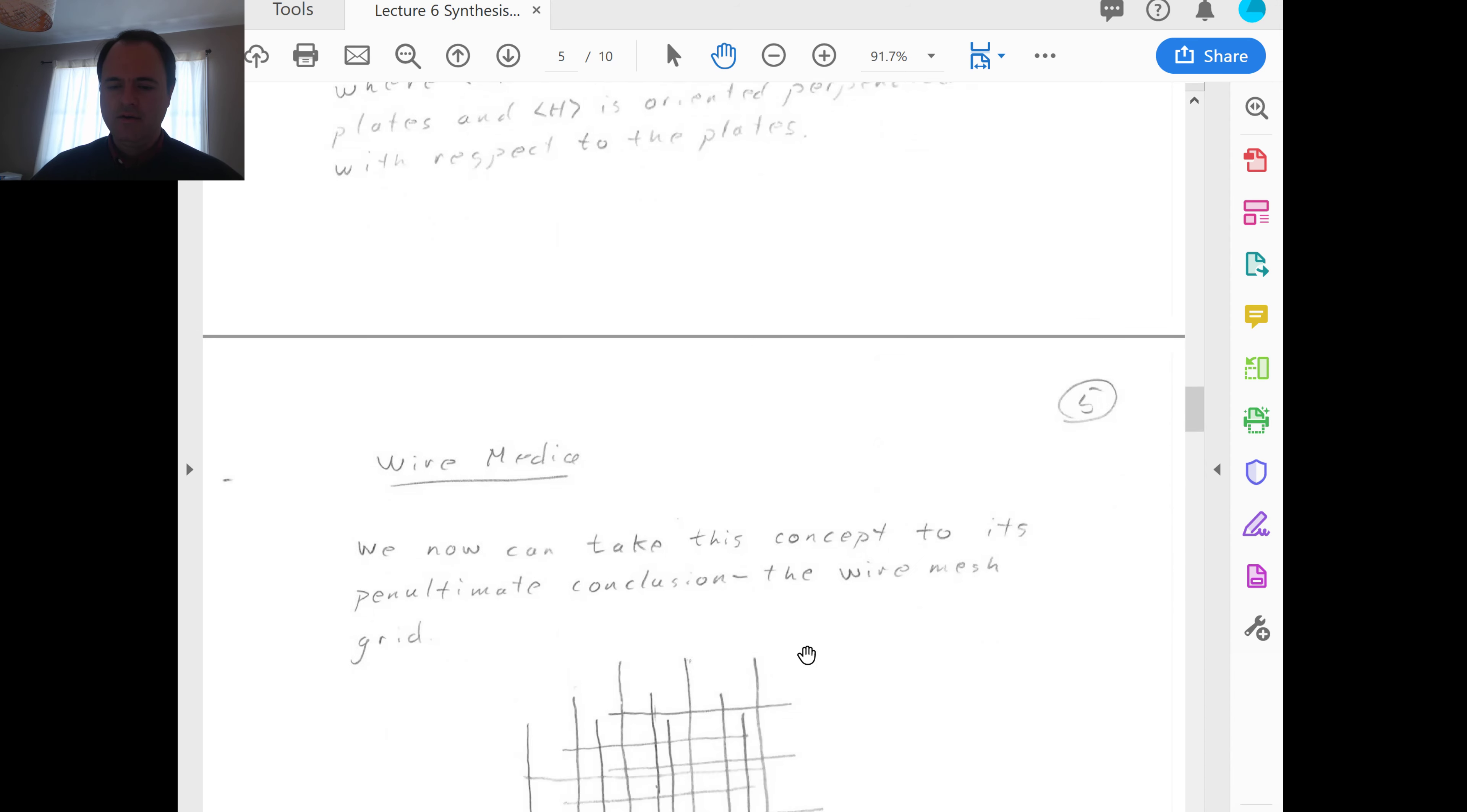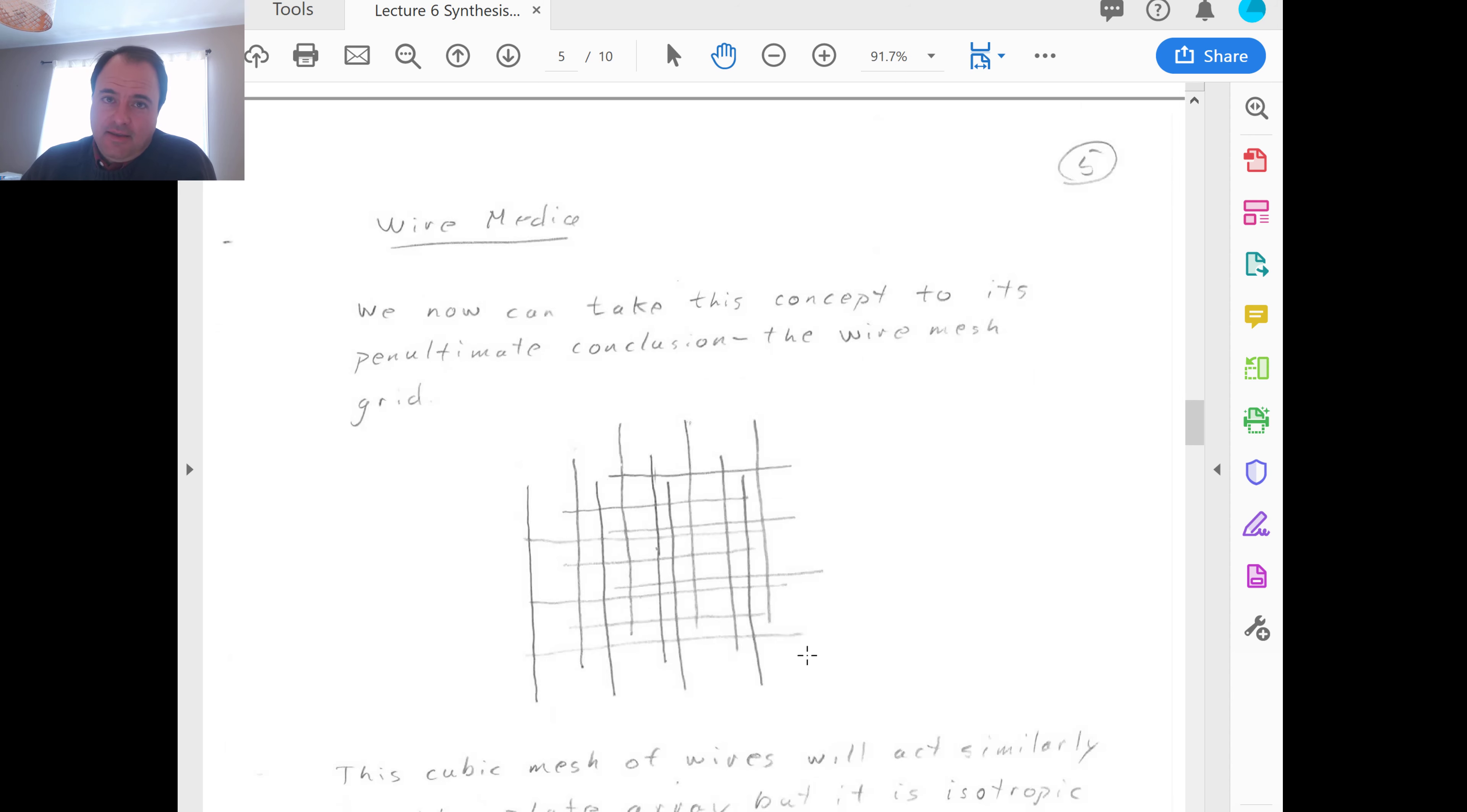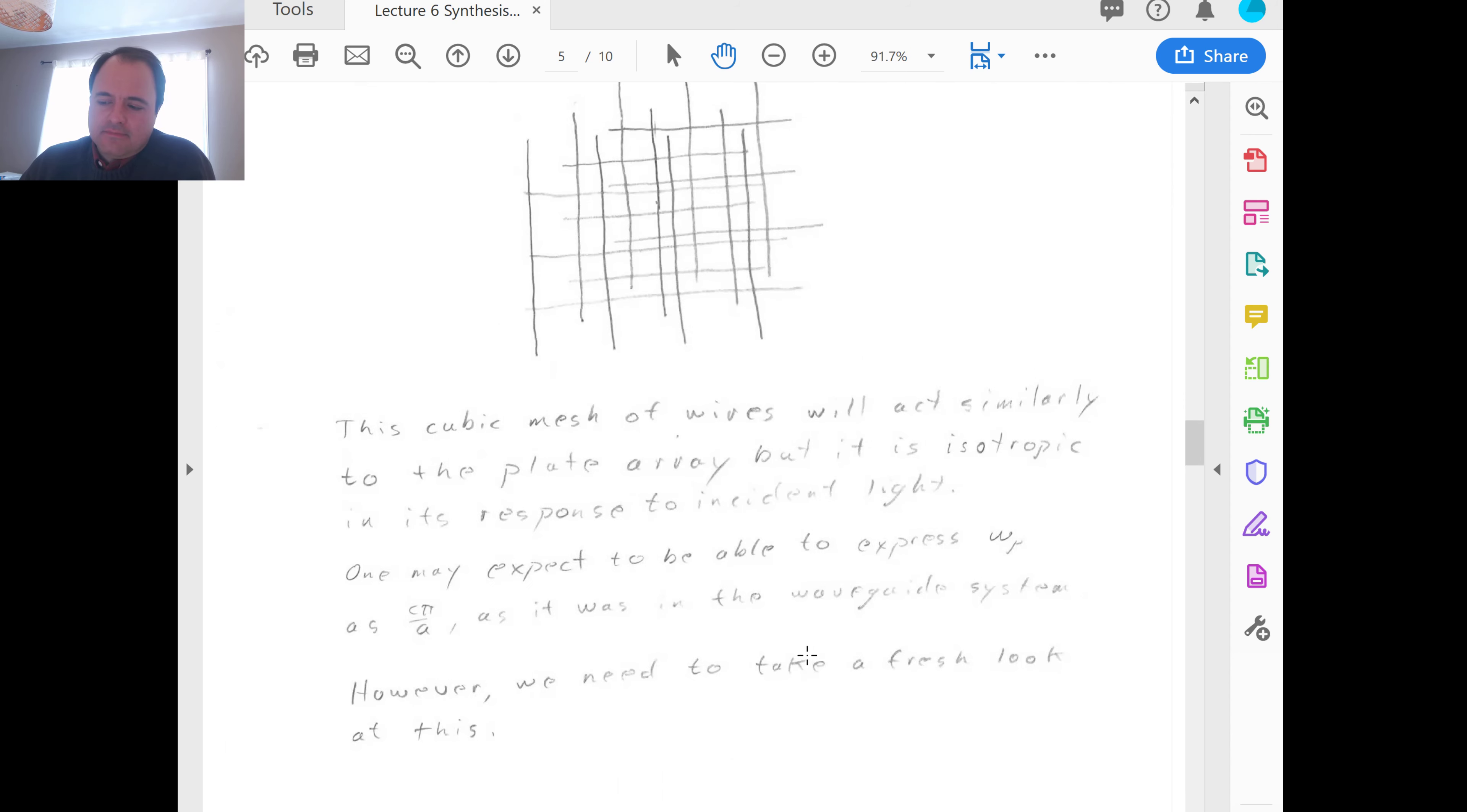This is a homework problem that I'll be assigning. Where E in diagonal brackets is oriented parallel to the plates, and H in diagonal brackets is oriented perpendicular with respect to the plates. So, you will work this, but the important thing here is the negative. So, the polarization vector is in the opposite direction of the electric field.